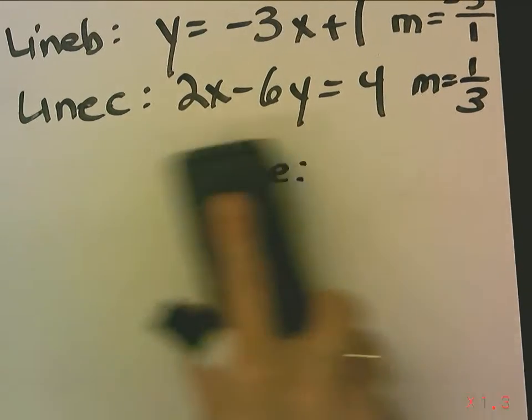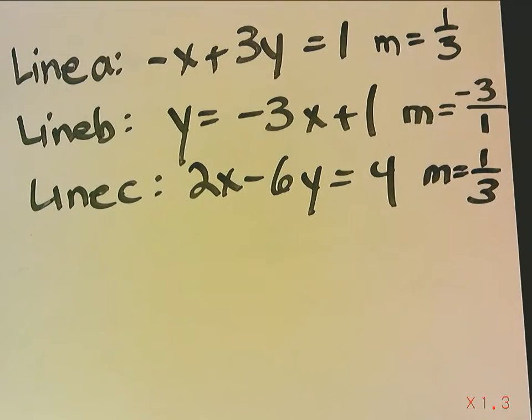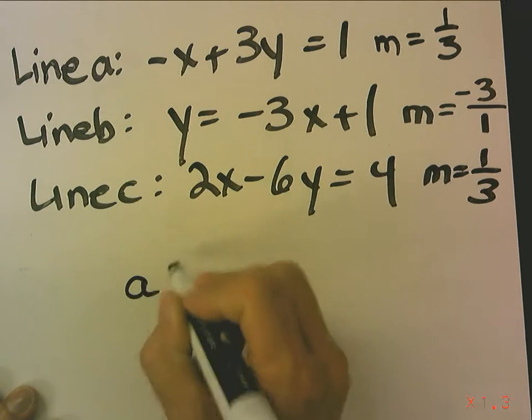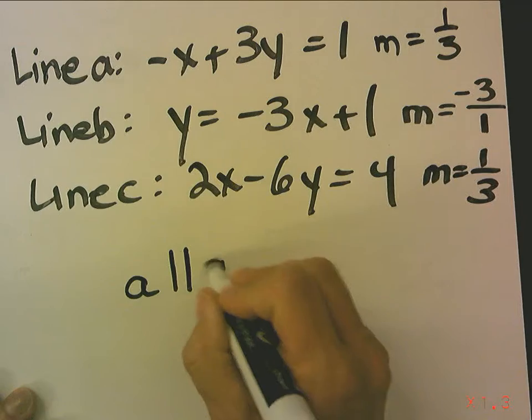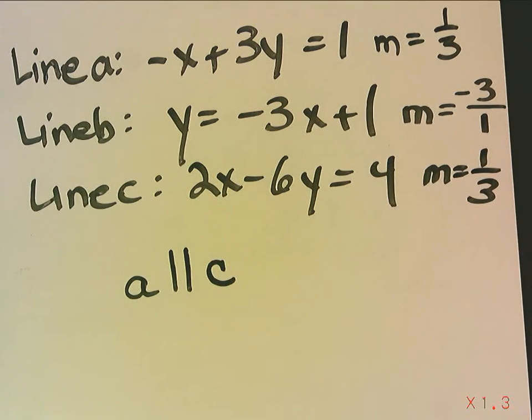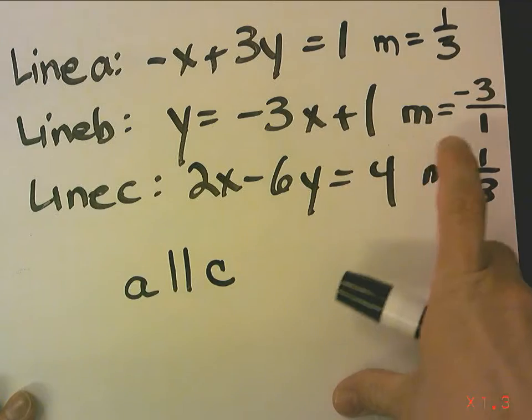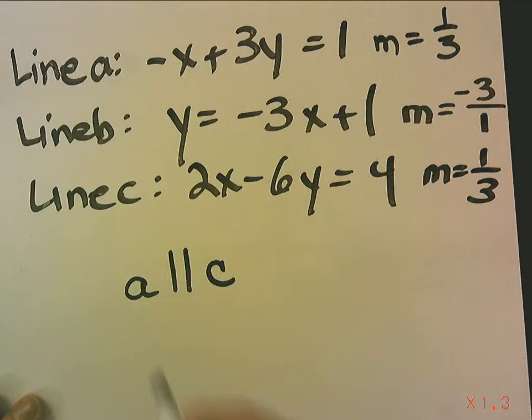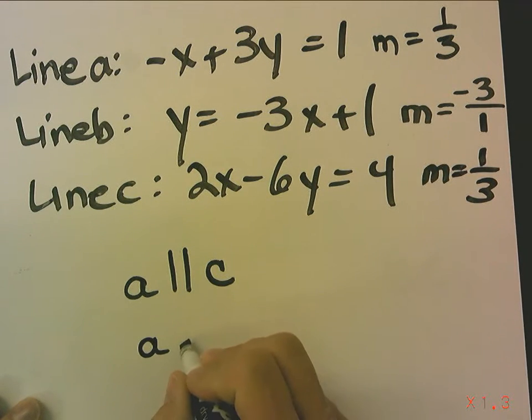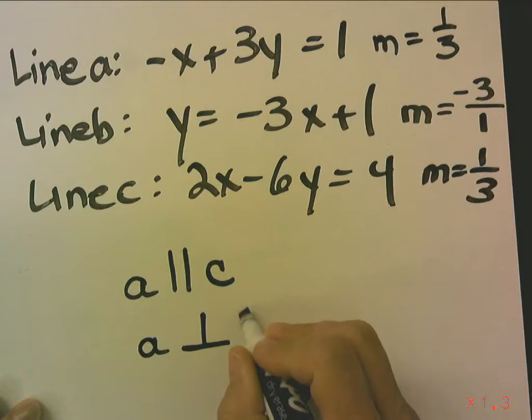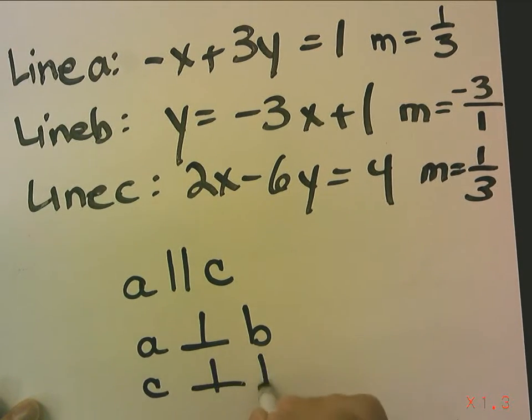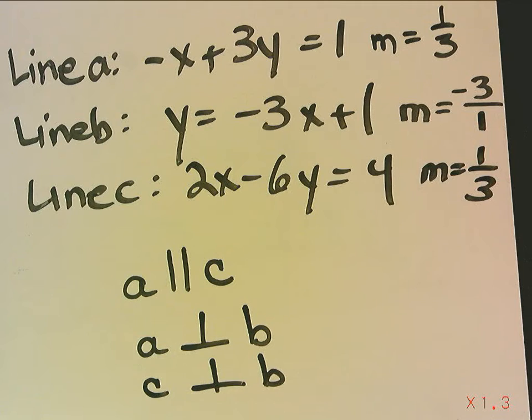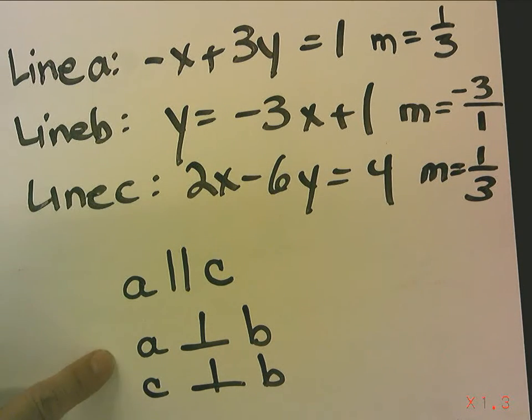So now we've identified each slope. Let's see what kind of observations we can make. Well, I notice A and C have the same slope. So line A is parallel to line C. But then notice line B has the opposite reciprocal. It flips and changes the sign. So both A is perpendicular to B, and C is perpendicular to B. So to answer the question, A and C are parallel, A is perpendicular to B, and C is perpendicular to B.